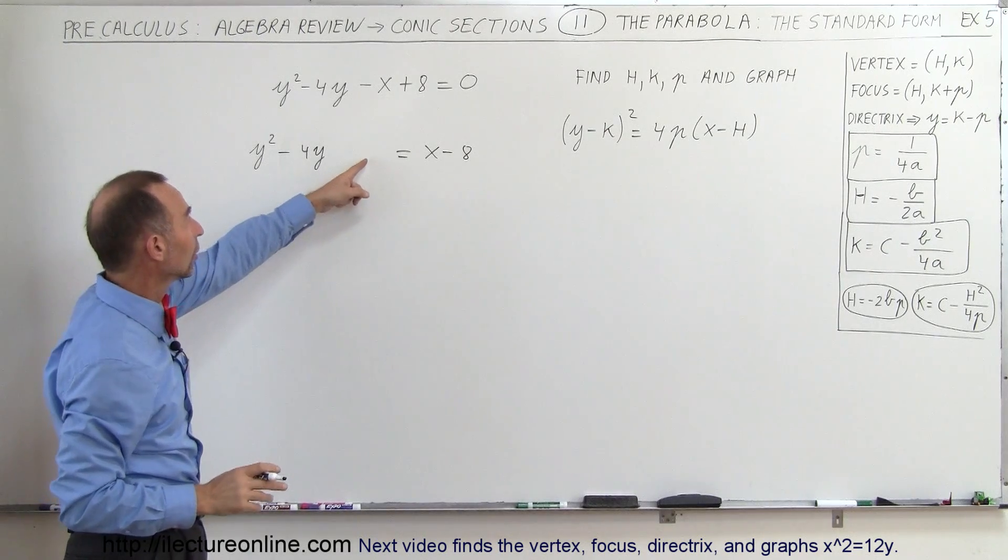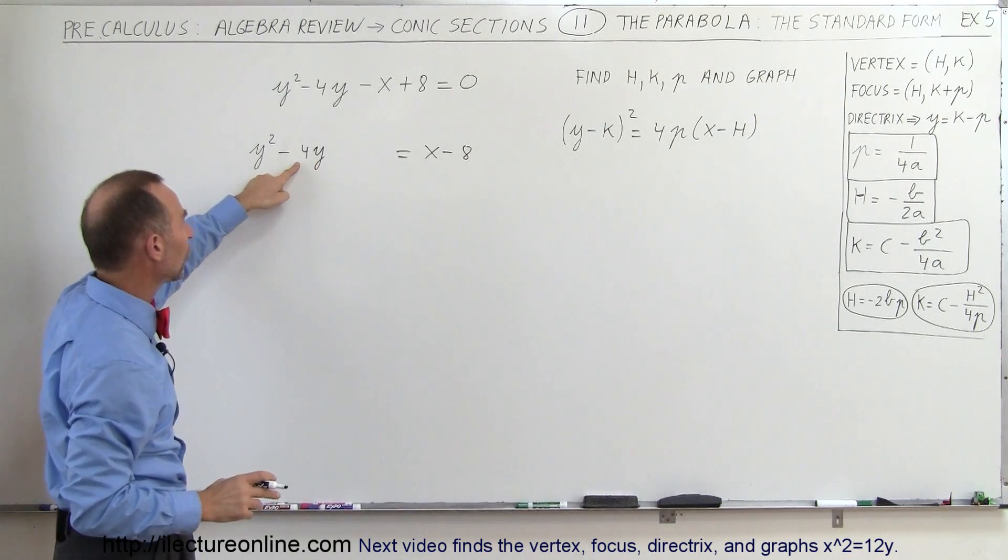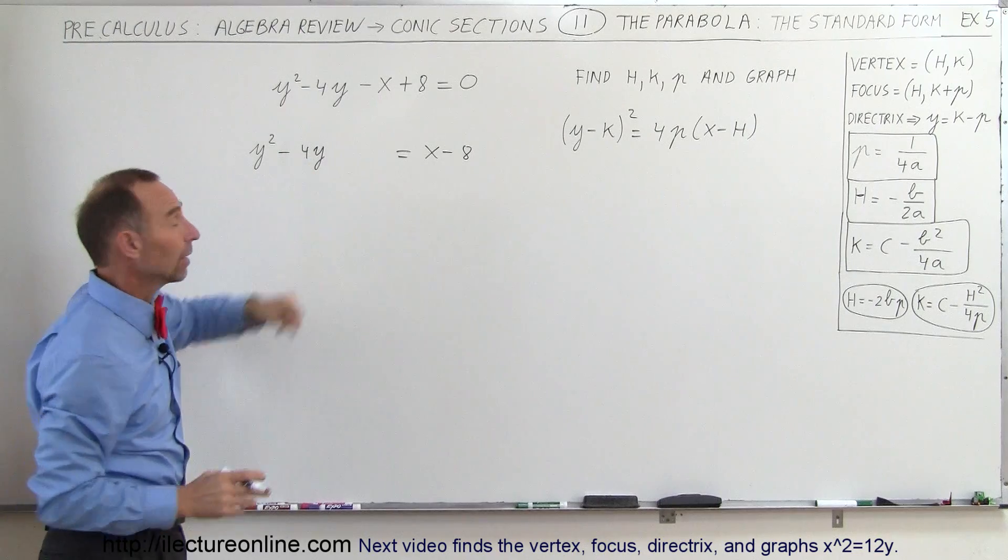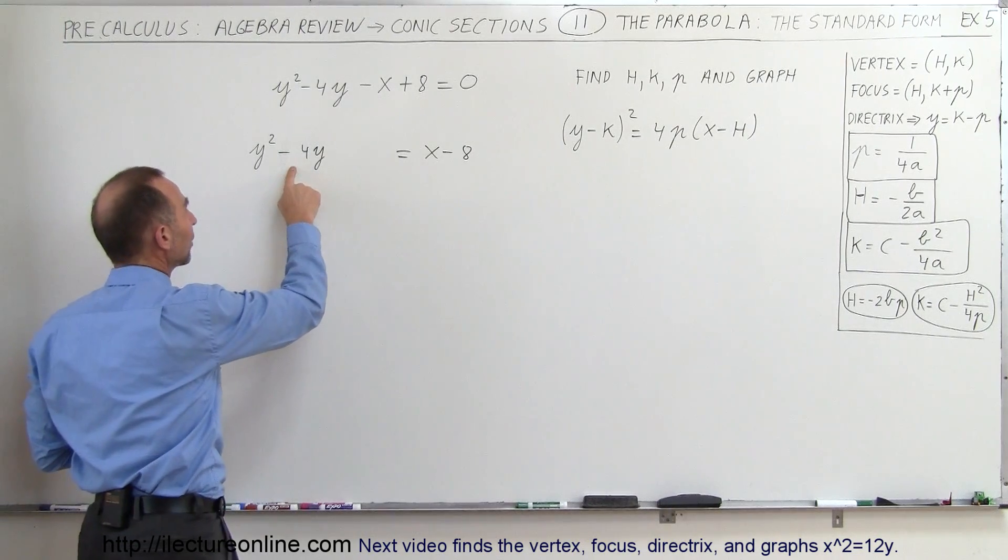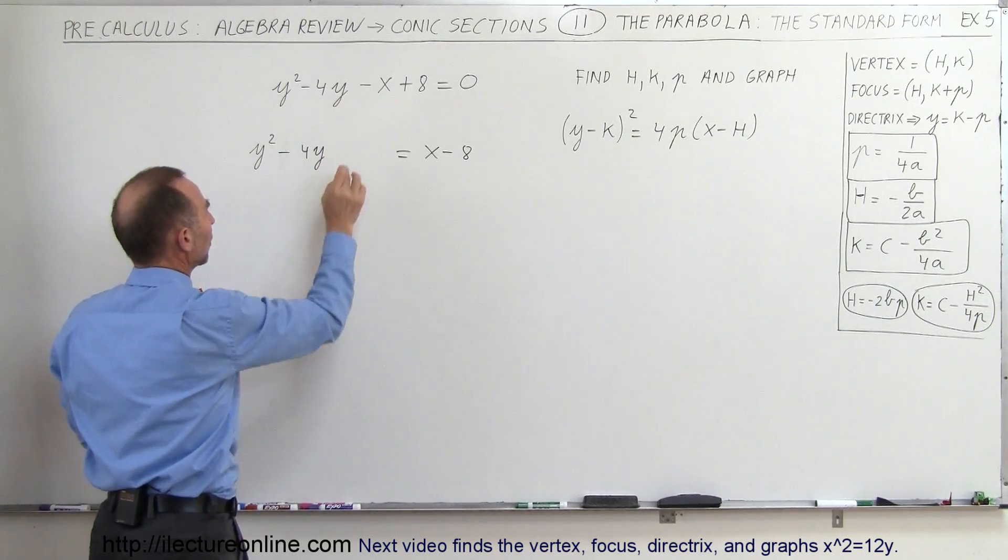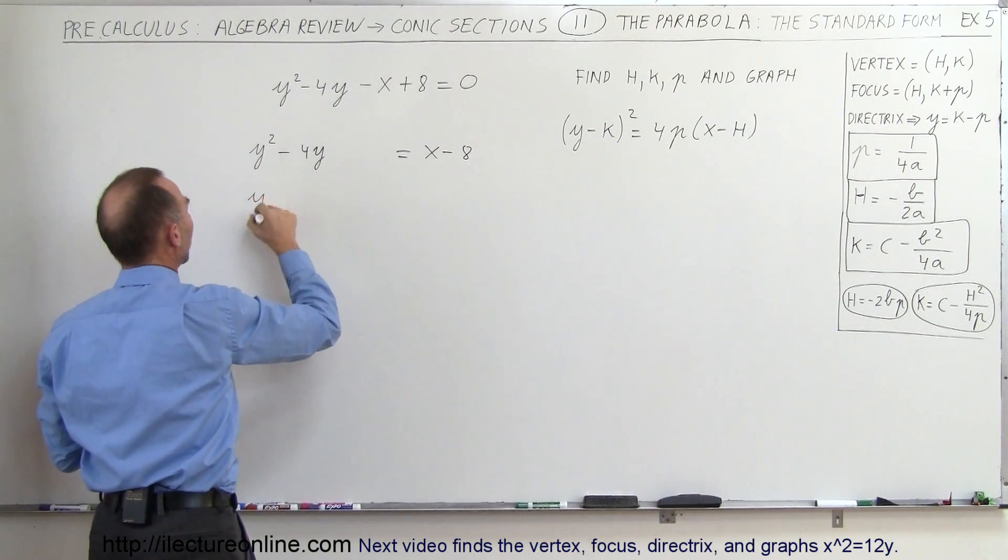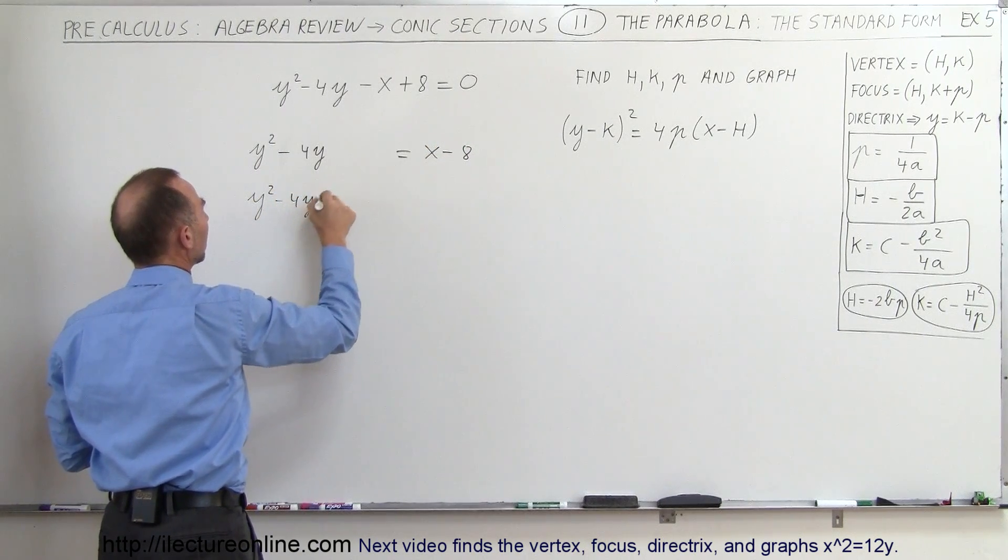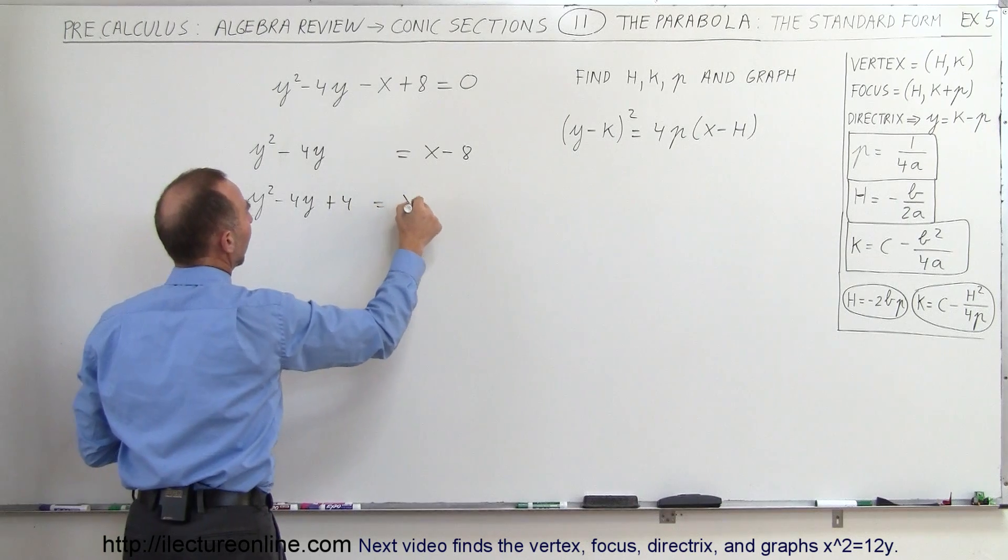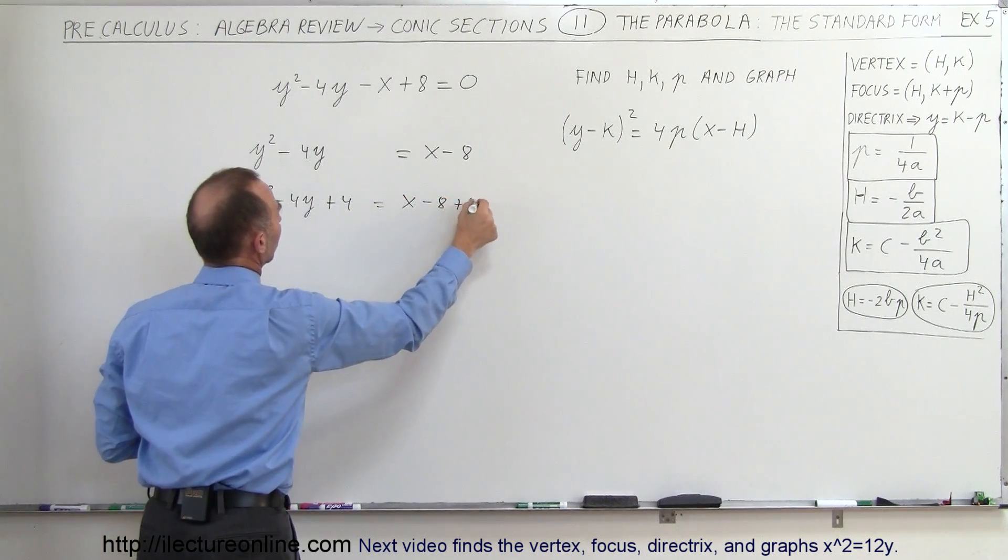Now here to make that a perfect square, we take half the coefficient here and square that. So half of -4 is -2 squared, you get +4. So we're going to add +4 and +4 over here, so we have y² - 4y + 4 equals x - 8 + 4.